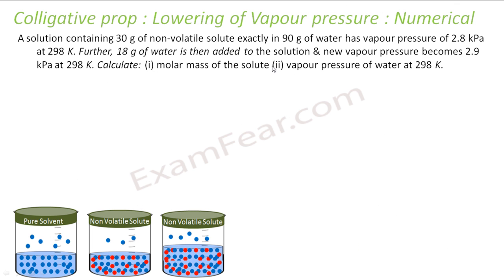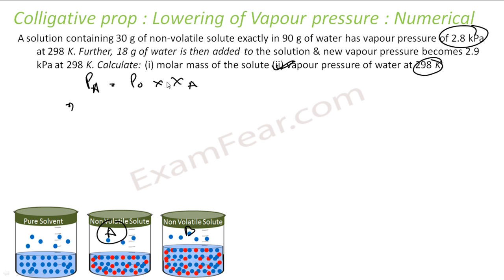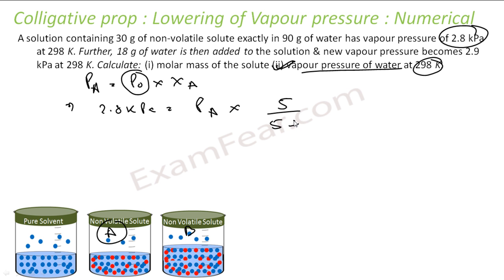The next part: find the vapor pressure of pure water at 298 K. Using PA = P0 × XA: 2.8 kPa = P0 × [5/(5 + 30/23)]. Solving this gives P0 = 3.53 kPa.